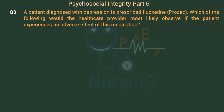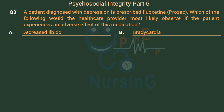A patient diagnosed with depression is prescribed fluoxetine (Prozac). Which of the following would the healthcare provider most likely observe if the patient experiences an adverse effect of this medication? Option A: Decreased libido. The right answer is Option A — Decreased libido.